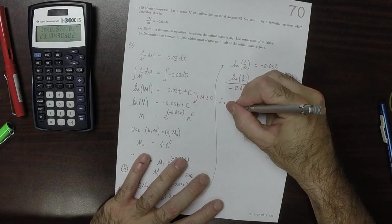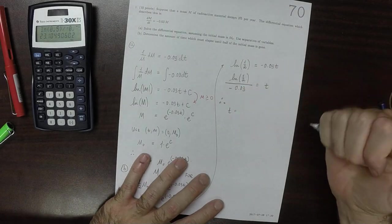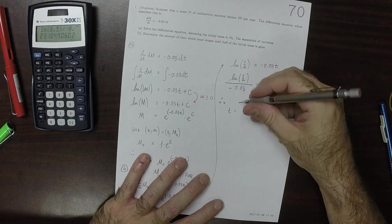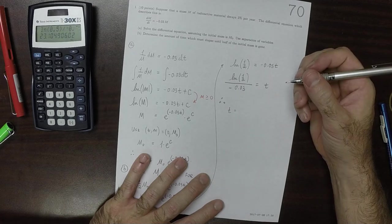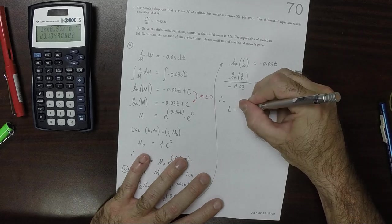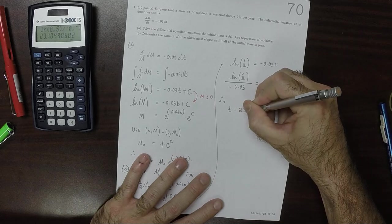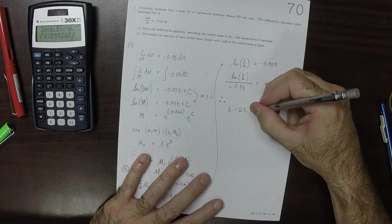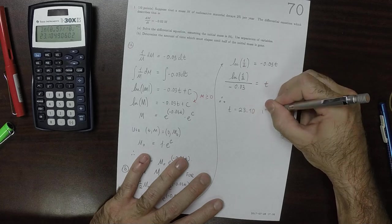We obtain that T is—well, it didn't say specifically to how many decimal places, so how about two decimal places, 23.10 years.